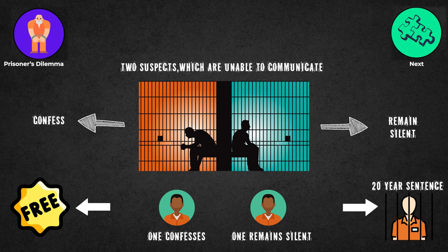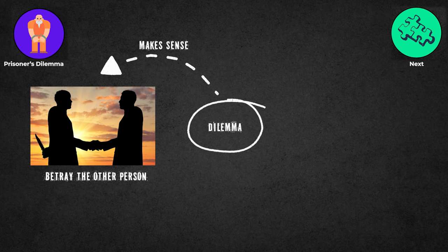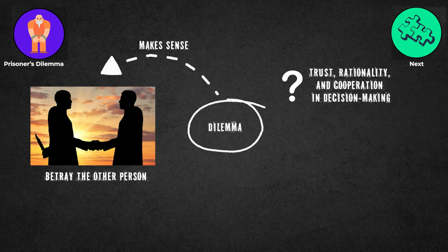In the dilemma, it makes sense to betray the other person no matter what they do if you only think about yourself. This experiment raises questions about trust, rationality, and cooperation in decision-making, showing how individual incentives can undermine collective outcomes.